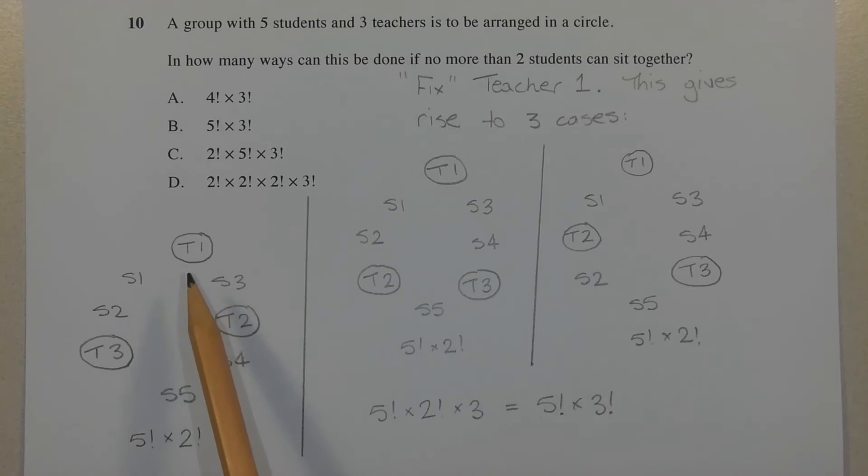And the final case is T1 here. We have two students here, S1, S2. We have the third student here, S3. We have teacher 2 here, teacher 3 here, and then two students here, S4 and S5. And again, there's 5 factorial times 2 factorial ways of arranging these students and teachers in this configuration.